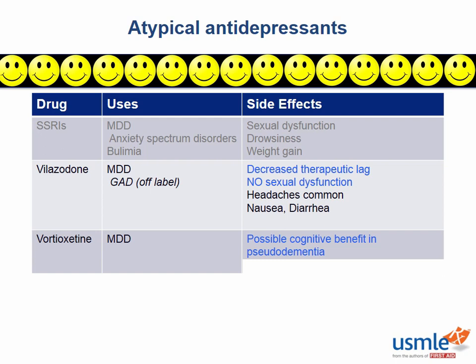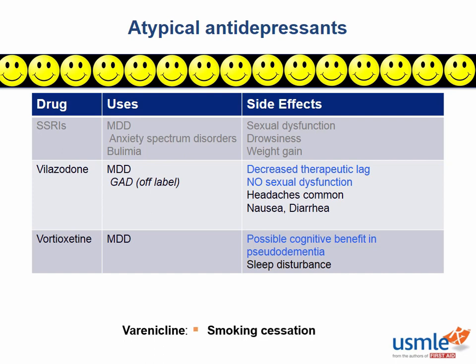Vortioxetine is also known for causing sleep disturbance — meaning you get weird dreams when taking this medication — in addition to a lot of the side effects you'll see with SSRIs, including sexual dysfunction, weight gain, and drowsiness. Both velazodone and vortioxetine can cause serotonin syndrome, just like a lot of other antidepressants, as well as some anticholinergic effects, but these are pretty rare and not specific to this category. Finally, varenicline is on the antidepressant list for some weird reason — it's not actually an antidepressant, it's a smoking cessation aid. Just remember that it can be associated with sleep disturbance.